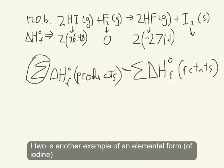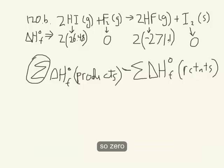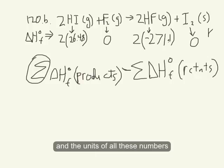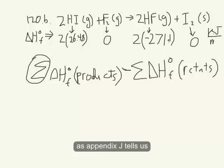I2 is another example of an elemental form, so zero. And the units of all these numbers are kilojoules per mole, as Appendix J tells us.